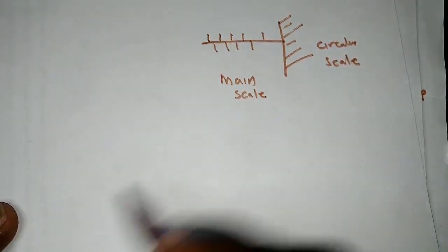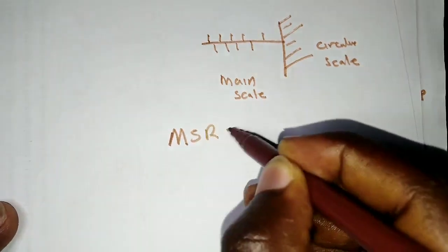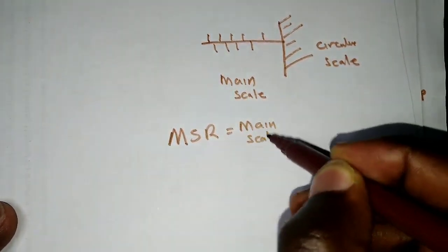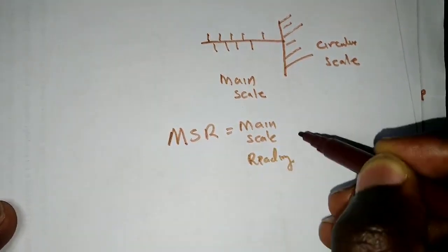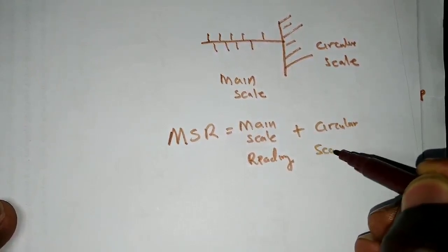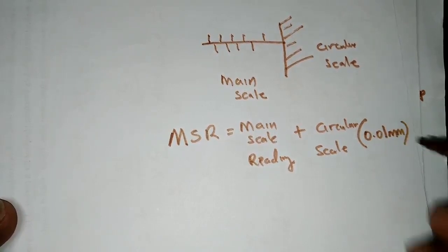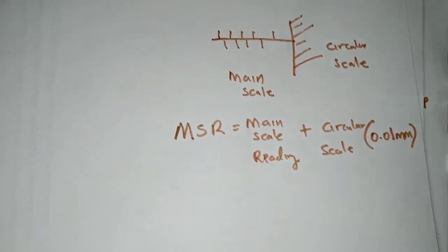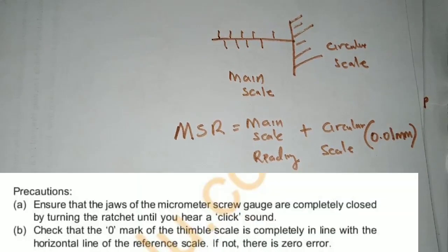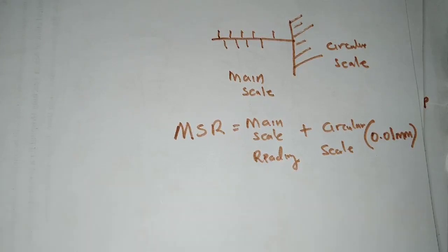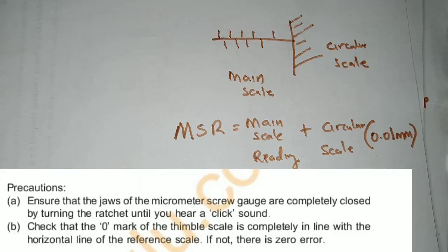The formula for the micrometer screw gauge reading is: main scale reading plus circular scale reading multiplied by the degree of accuracy, which is 0.01 millimeters. As a precaution, ensure the jaws of the micrometer screw gauge are completely closed by turning the ratchet until you hear a click. Also check that the zero mark of the thimble scale is completely in line with the horizontal reference line, to avoid zero errors.